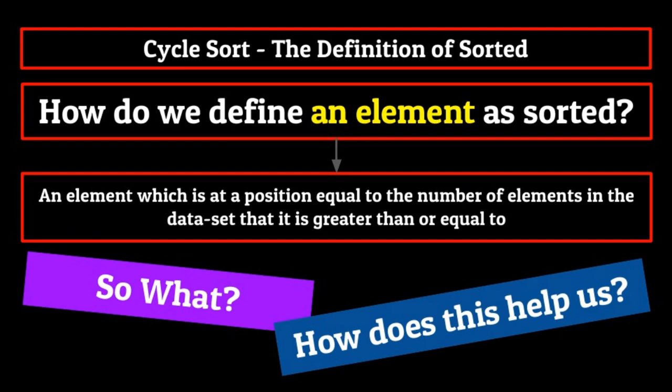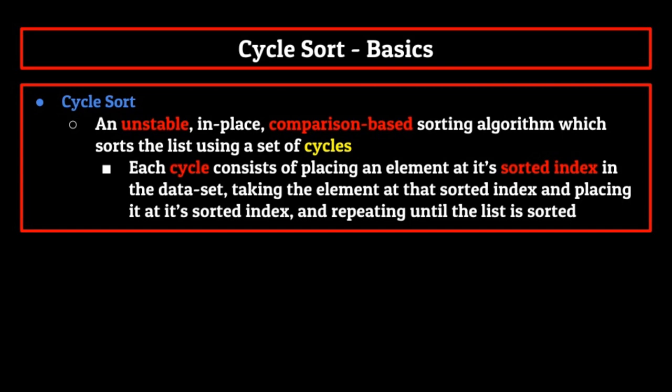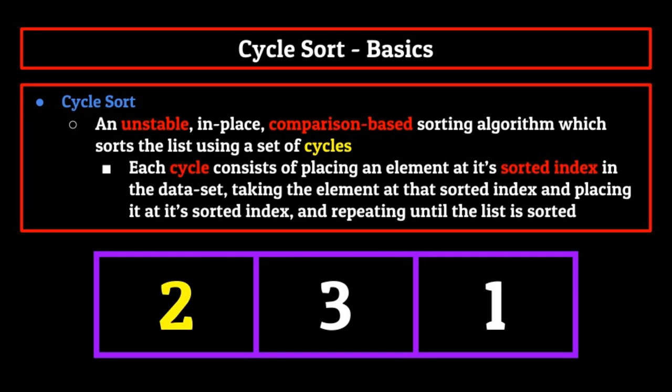Thought experiment over. Let's now jump straight into cycle sort. We can define cycle sort as an unstable, in-place, comparison-based sorting algorithm which sorts the list using a set of cycles. Each cycle consists of placing an element at its sorted index in the data set, then taking the element at that sorted index and placing it at its sorted index, and repeating this until the cycle is complete. If we do this for each cycle in the data set, we are left with a sorted data set. This algorithm is known for being theoretically optimal for the total number of writes to the original data set, meaning we only ever overwrite data when placing an element at its correct position.